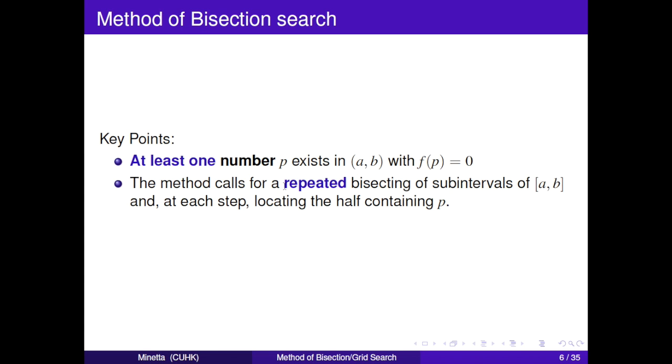You should bear in mind that there are two key points. First, at least one number p, which means sometimes maybe there are more than one p. Last, the method calls for repeated bisecting of interval [a, b] and at each step, locating the half containing p.